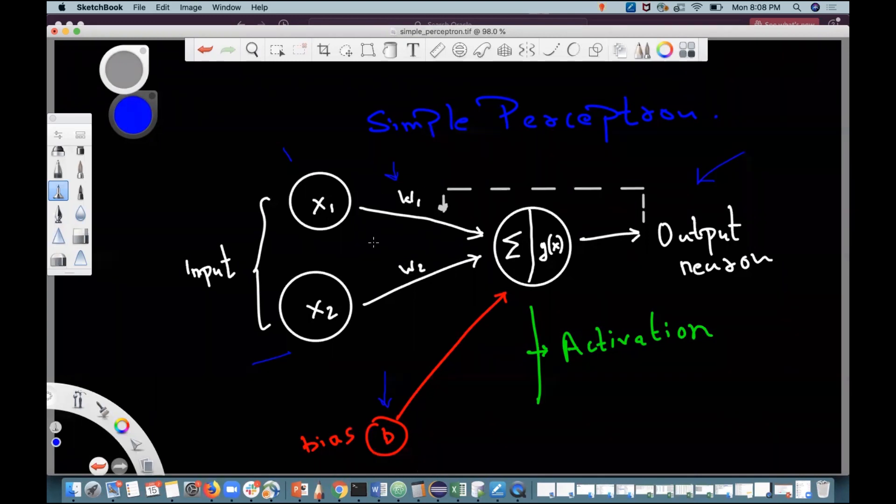Here's the thing: in a neuron there are two parts. One is this sigma and one is the activation part. What happens in the sigma?